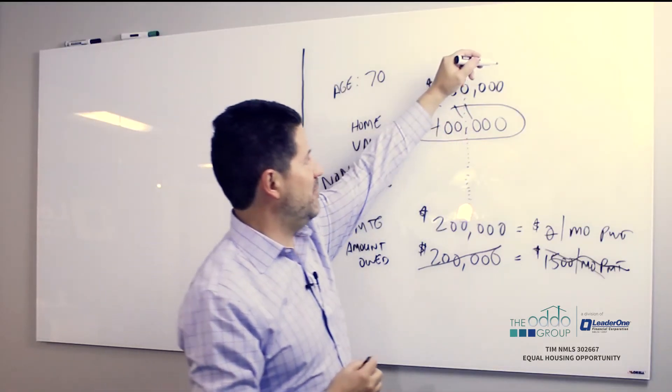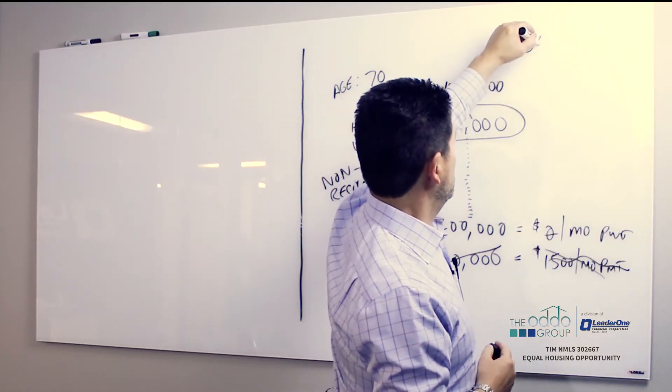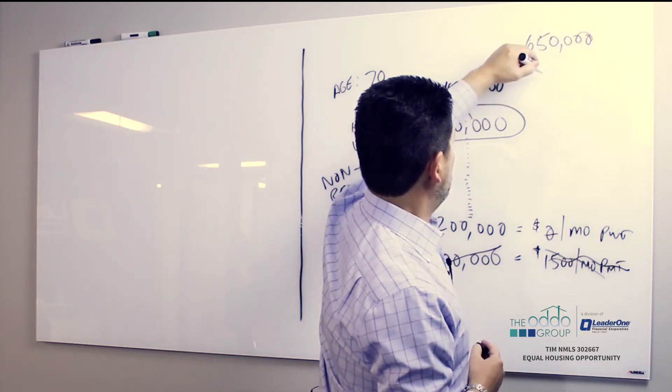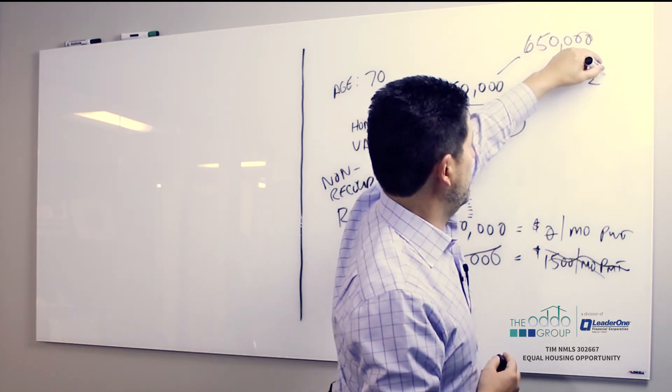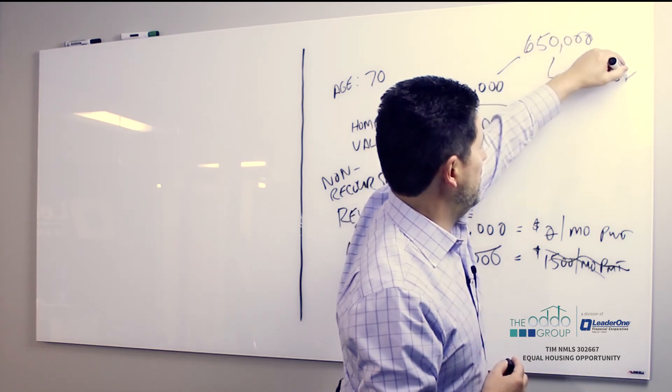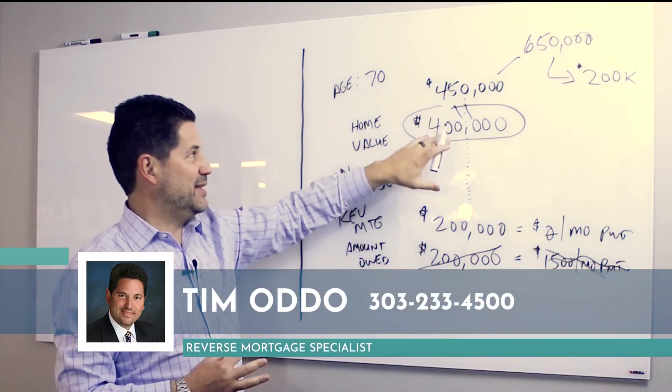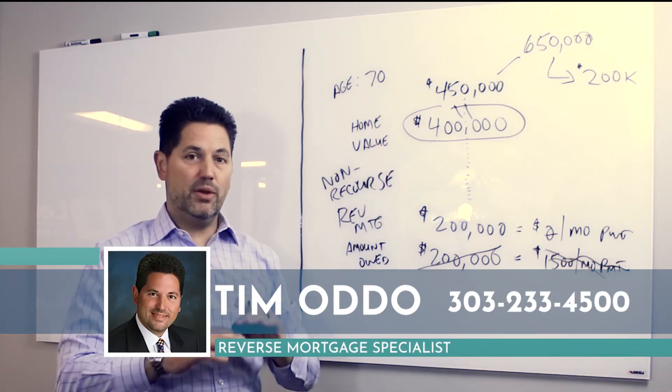What's more likely to happen is the value of this home is probably going to be $650,000 or higher, and mom and dad still probably have $200,000 of equity that the kids or mom and dad get to take with them. But in the event that they owe more than the home is worth, they're always protected.